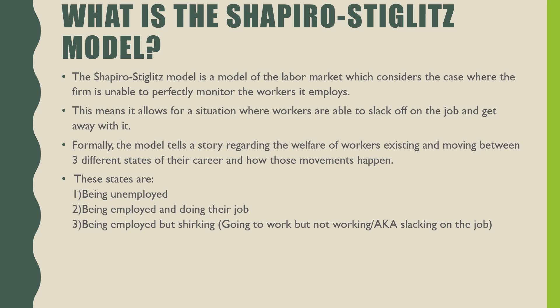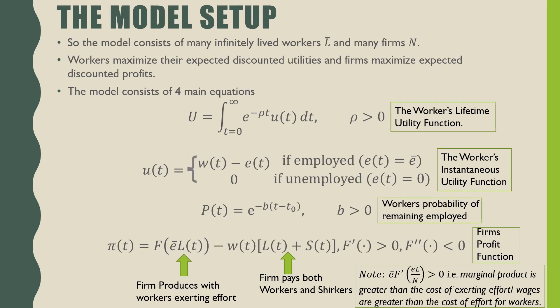These states are: being unemployed, being employed and doing their job, and the third one is being employed but shirking. Shirking just means that you go to work but you just don't do your job — you're making paper airplanes or checking your Facebook, doing something else that's not working and not productive for the firm.